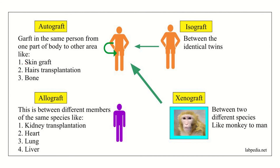Here we can see the types of autograft. Autograft means tissue collected from one part of the body and transplanted into another part — for example, skin graft, where skin is usually collected from the thigh for road traffic accident or burn patients to restore their epithelial surface. Hair transplantation is also an autograft, as is bone transplantation — for example, the fibula being cut and placed in the mandible.